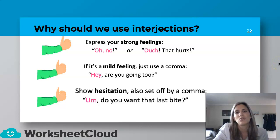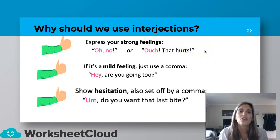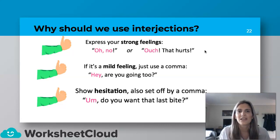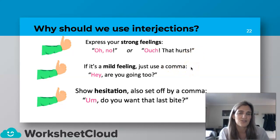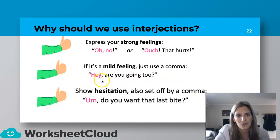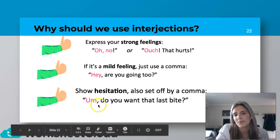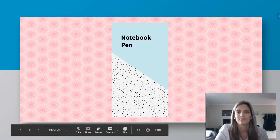Why should we use interjections? You use interjections to express your strong feelings. For example: "Oh, no! I can't believe you did this to me," or "Ouch, that hurts!" If it's a mild feeling — not as strong — just use a comma before the sentence. So: "Hey, are you going to?" And when we show hesitation, we also use a comma: "Um, do you want the last bite?"